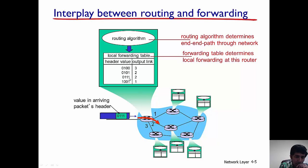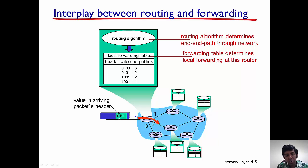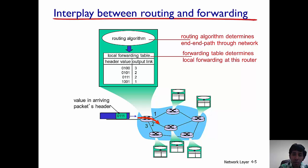The forwarding table defines local forwarding at any particular router. For example, if a packet with header 0101 arrives at this router, it will be sent on output link 2. If something with 01001 arrives, it will be sent on output link 1. When a packet arrives with header 0111, the output interface is 2. That is the important interplay between routing and forwarding: routing determines the end-to-end path, but forwarding determines the local forwarding decisions at the intermediate routers.